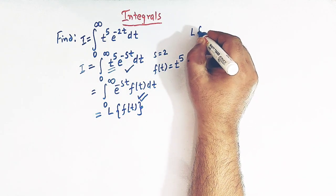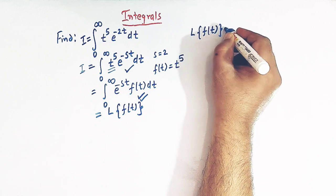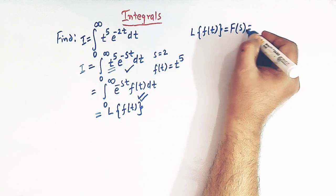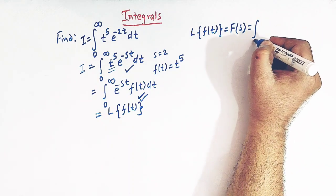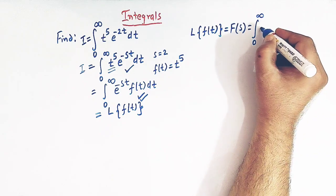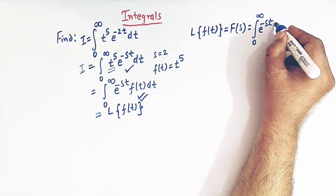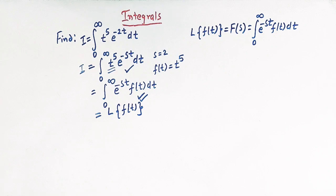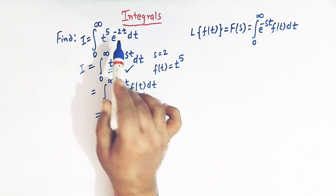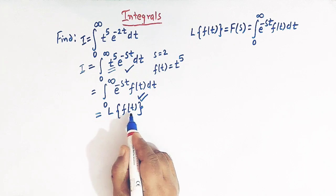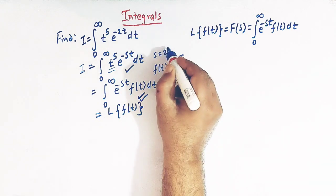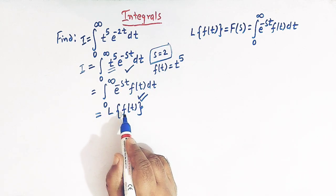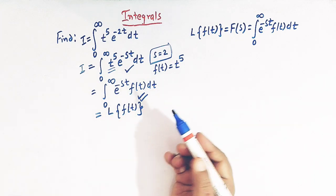If we have a function f of t, then the Laplace transform of f of t is defined as F of s, given by the integral from 0 to infinity of e raised to minus st times f of t, dt. So our integral is reduced to the Laplace transform of f of t, provided s is equal to 2.